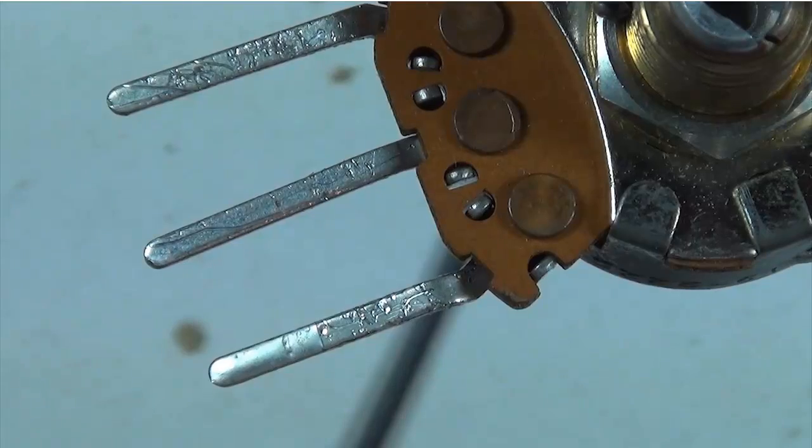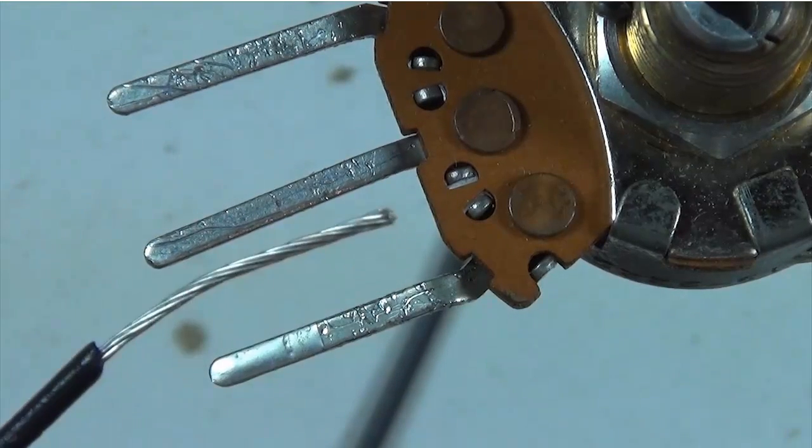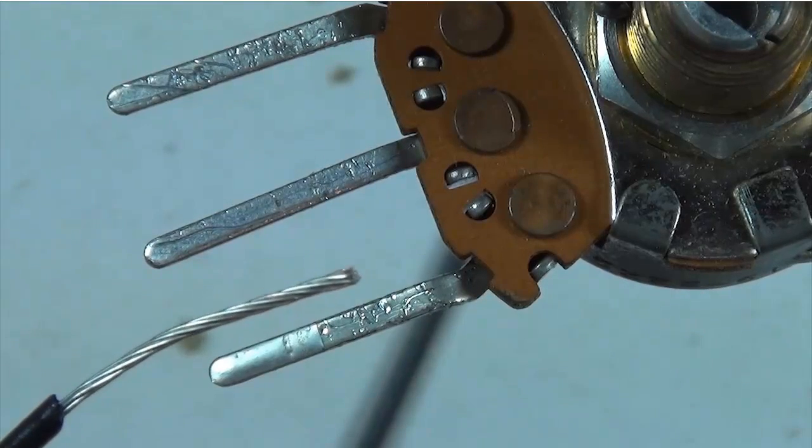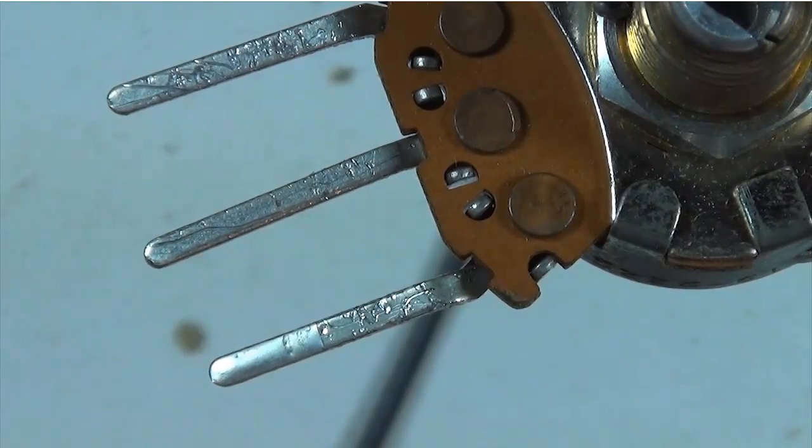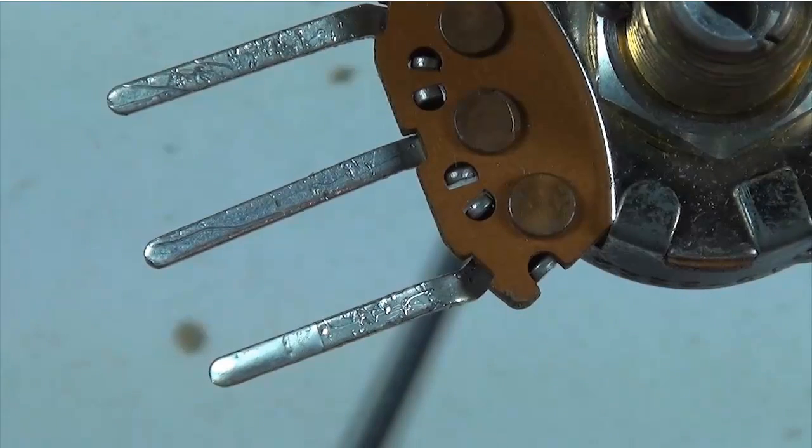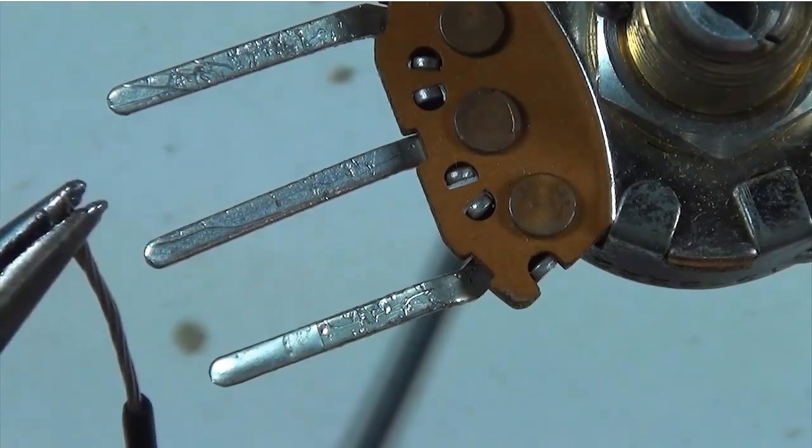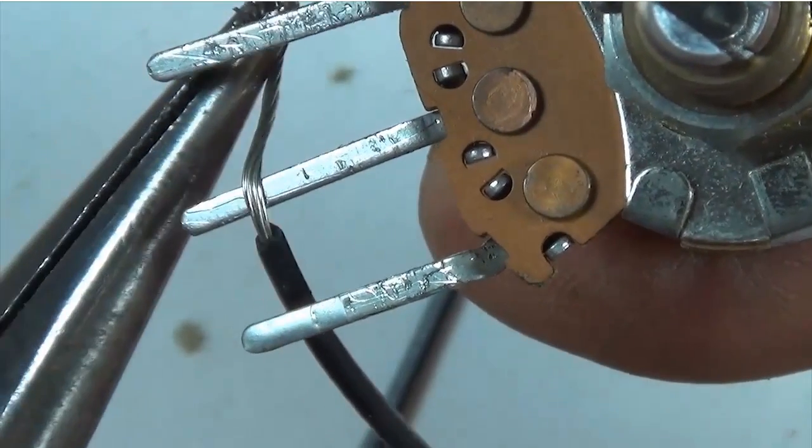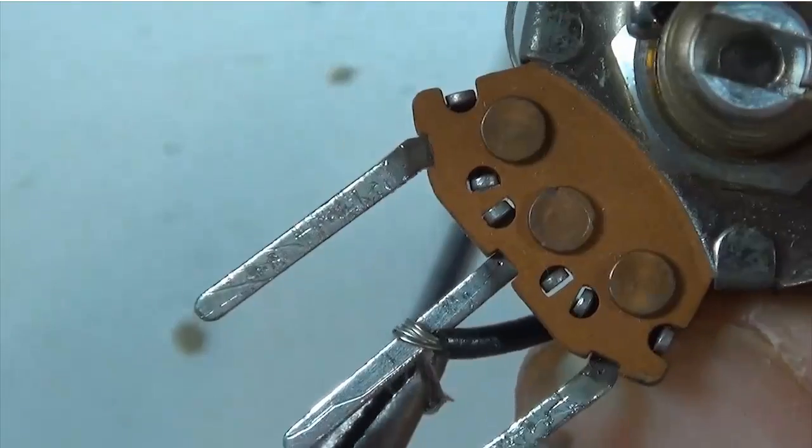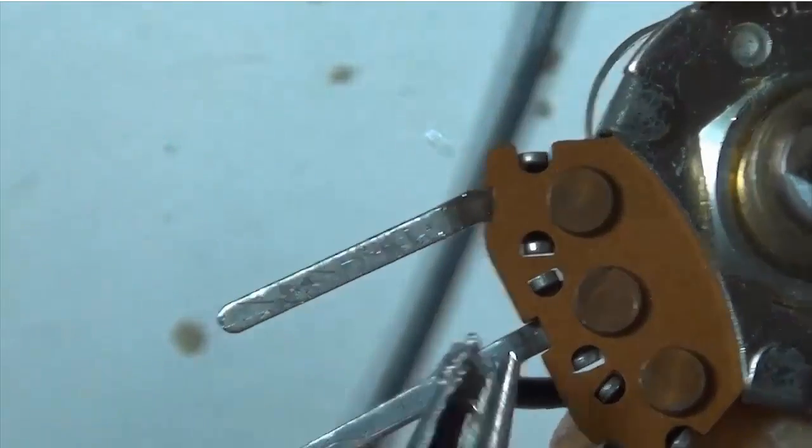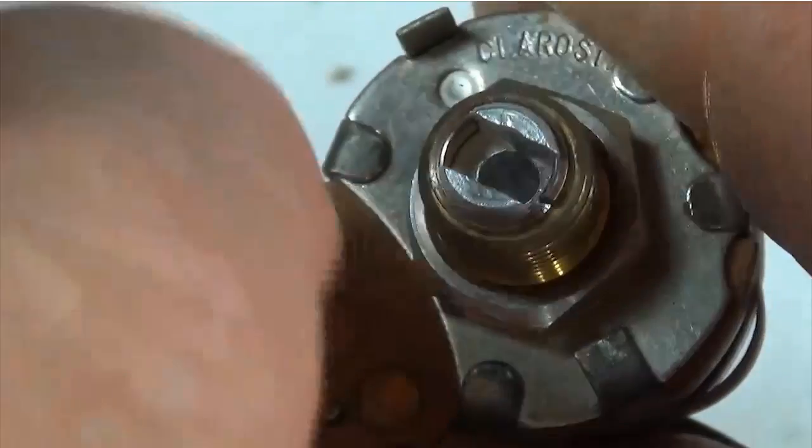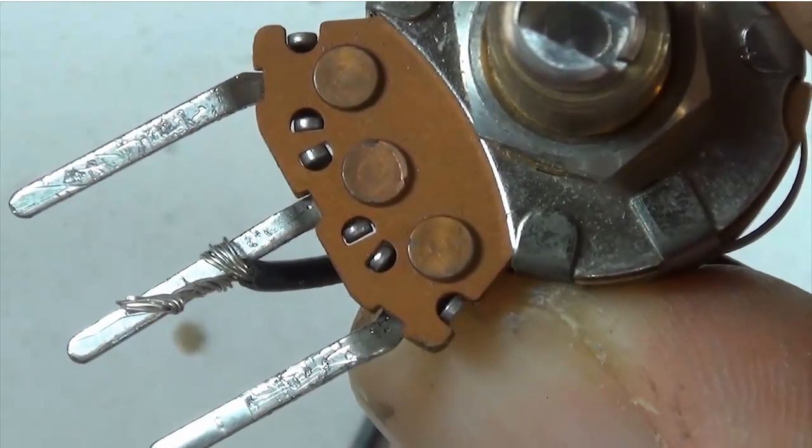So now let's solder a wire onto this spade terminal. Remember we should twist our wire - it doesn't matter which way, clockwise or counter-clockwise. Then I'm going to grab onto the end of the wire with my needle nose pliers and wrap around the spade connector once, just like so. Just straighten that wire up, make it look a little neater, and there we have it.